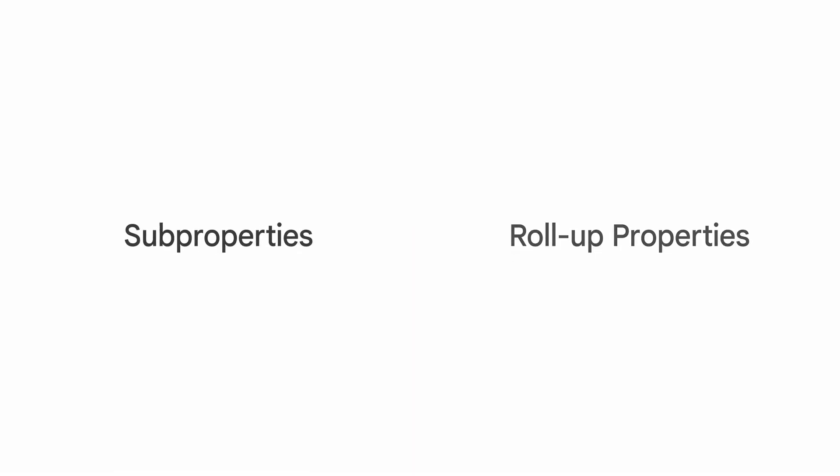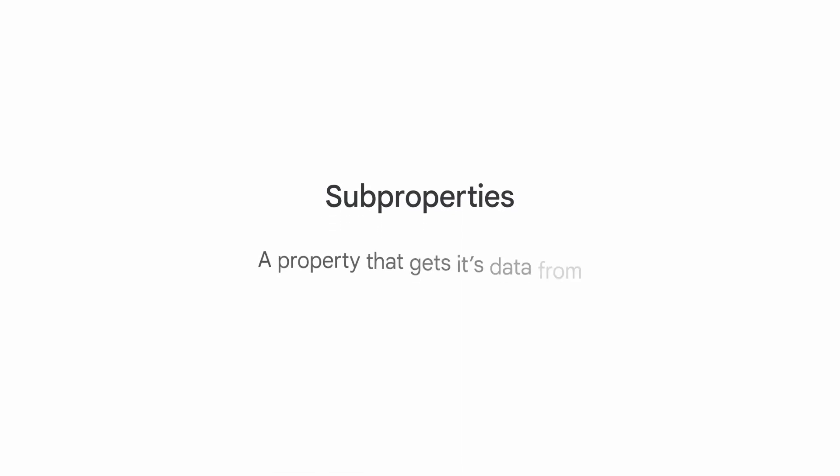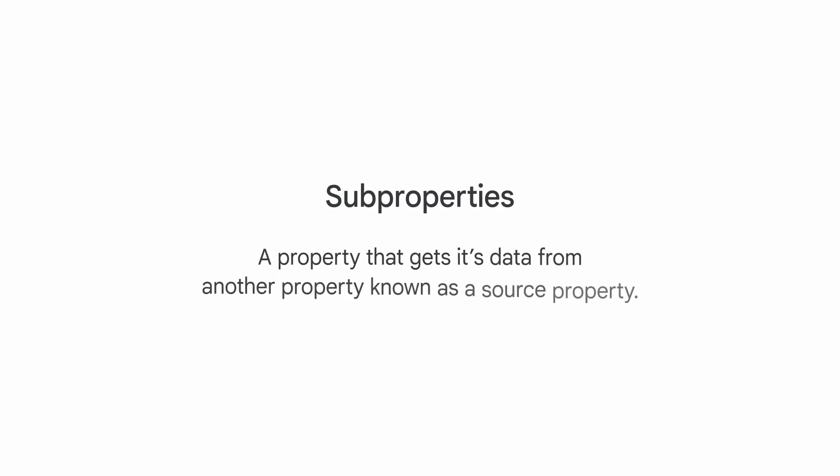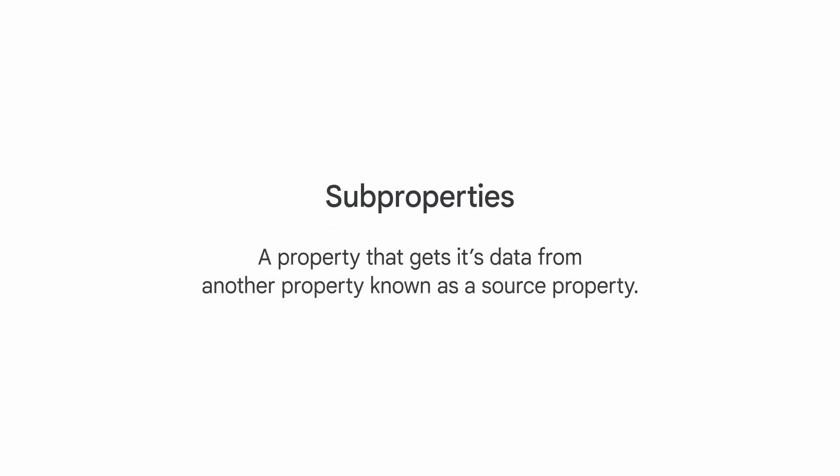GA 360 properties also offer more flexibility to manage access to your properties and data. Let's walk through two useful features of GA 360 for data management: sub properties and roll-up properties. A sub property is a property that gets its data from another property known as a source property.